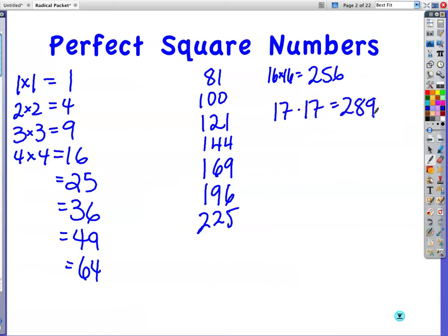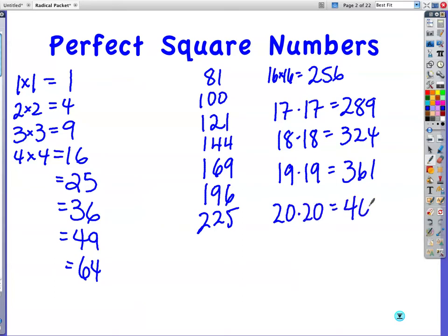So we should recognize when we see 289. 18 times 18 is 324. 19 times 19, 361, and 20 times 20 is one you should know without having to even guess. 400.